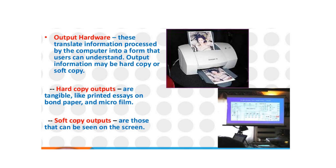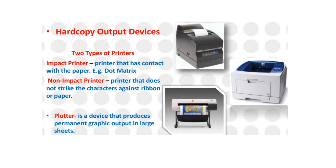Now we shall see some output hardware. These are the devices that translate information processed by the computer into a form that users can understand. Output information may be a hard copy or soft copy. Hard copy outputs are tangible like printed assets on bond paper and microfilm. The soft copy outputs are those that can be seen on the screen. Here is some picture of hard copy output devices. Two types of printers are shown here: impact printer, this kind of printer has contact with the paper, for example dot matrix; and non-impact printer, the printer that does not strike the characters against ribbon or paper. The plotter is a device that produces permanent graphic output in large sheets.